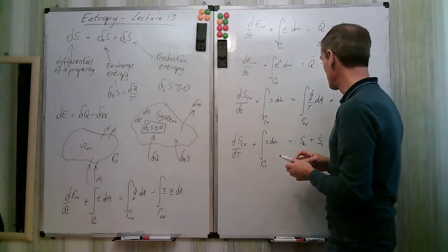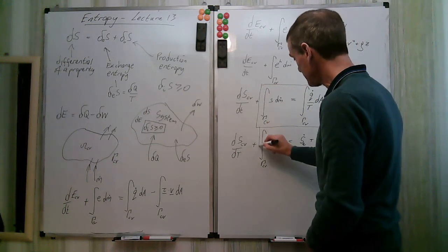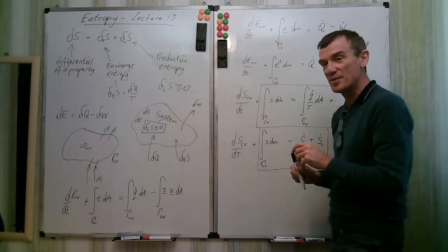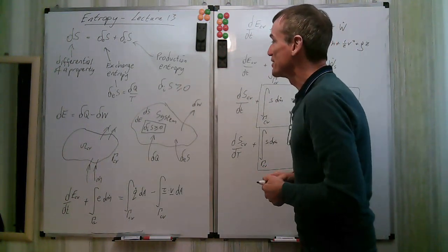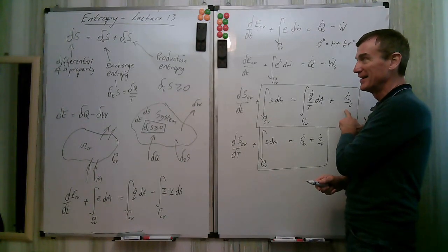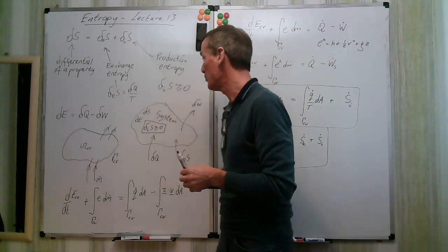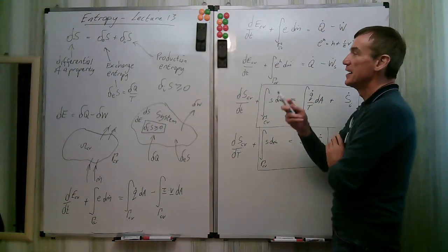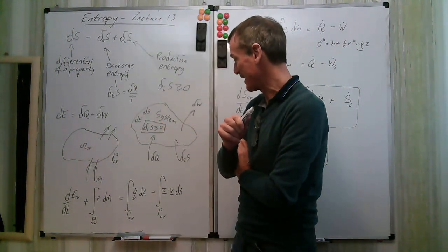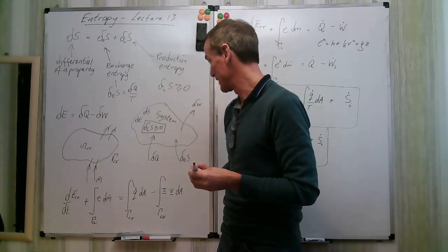Work is ordered; heat is the problem when it comes to entropy. There's a total absence of work in the entropy transport equation. Now I want to apply the steady-state equation to our adiabatic machines. We're not going to work out S-i-dot directly on this course — that's a bit more advanced. We know it's always positive, and we'll get to entropy values by using thermodynamic properties and tables.